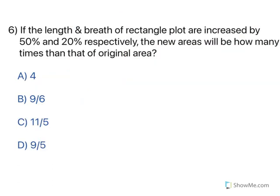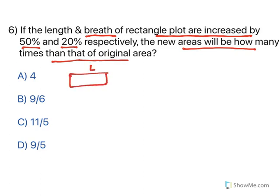Moving to the next one. The length and breadth of a rectangle plot are increased by 50% and 20% respectively. The new area will be how many times that of the original area. Again, the moment you see percent, use 100 as the standard. Area is length × breadth. Initially take length as 100 and breadth as 100, so the original area is 10,000. Length increased by 50% becomes 150, and breadth increased by 20% becomes 120.